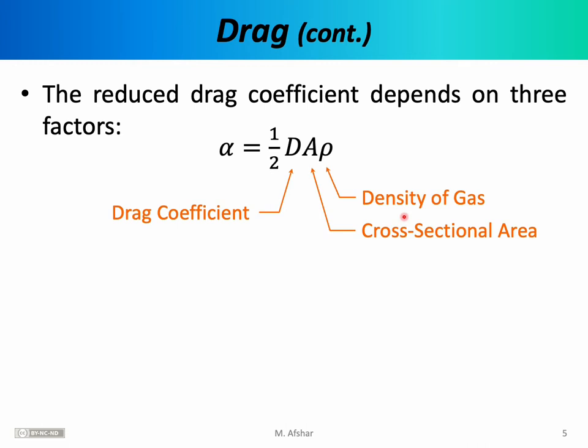If a person is parachuting to Earth and moving through the Earth's atmosphere, then rho would be the density of air, and in that case we refer to drag as air resistance. It is also possible to move through other gases — for example, when the Martian rovers were landing on Mars, NASA designed the mission so the rovers would parachute through the Martian atmosphere, which is primarily carbon dioxide. So the drag force could be calculated using the density of carbon dioxide; this formula works for any type of gas, so long as you know its density.